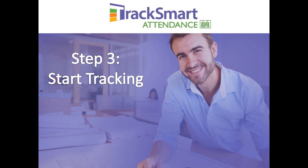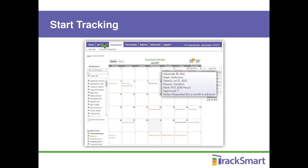Onward to step three, where the adventure begins. You've added your employees and given them self-service — now you can start tracking. Click 'Attendance' in the top menu to get to your calendar; there are also plenty of links on the dashboard to get there. If you want to view only certain types of calendar entries, use the filters on the bottom left to turn them on and off — for example, uncheck everything except absences to see absences only. You can also filter by specific individuals or by department using the dropdown on the top left.